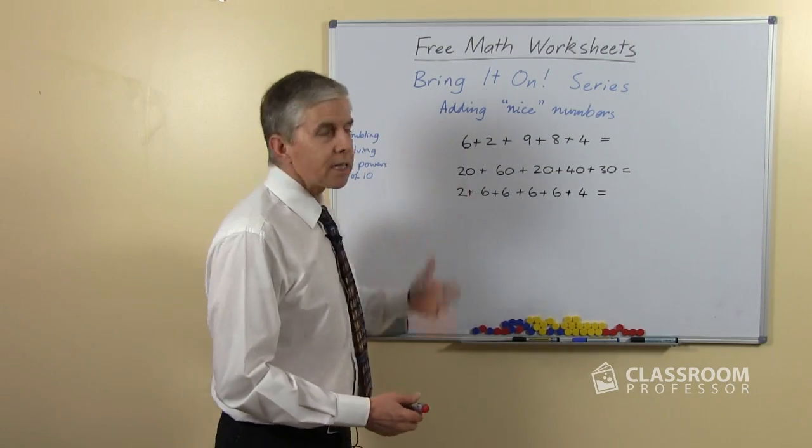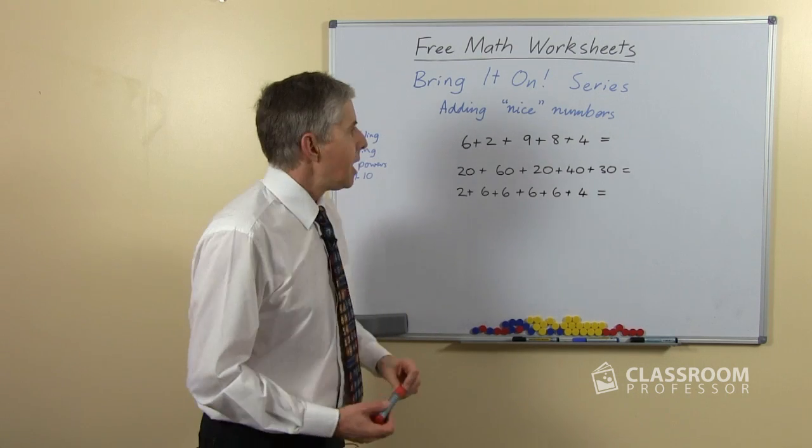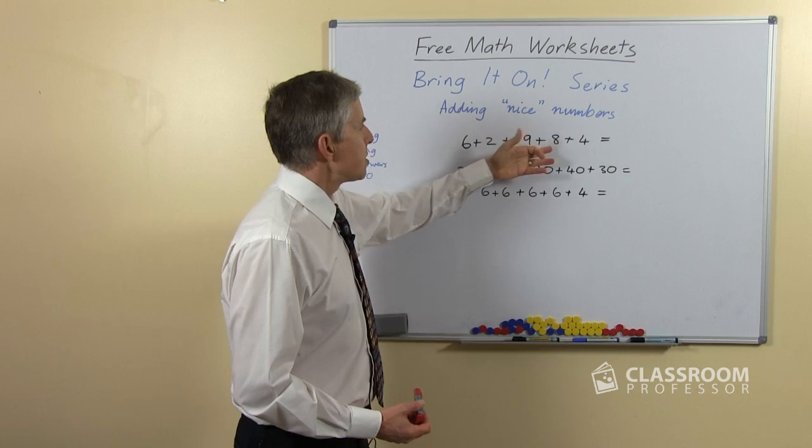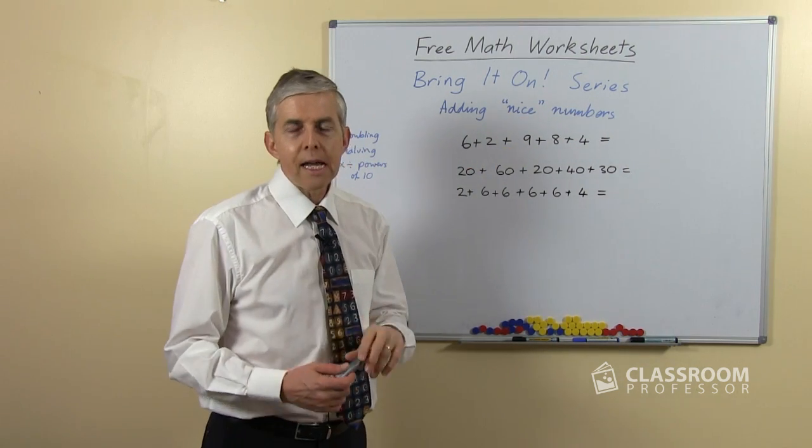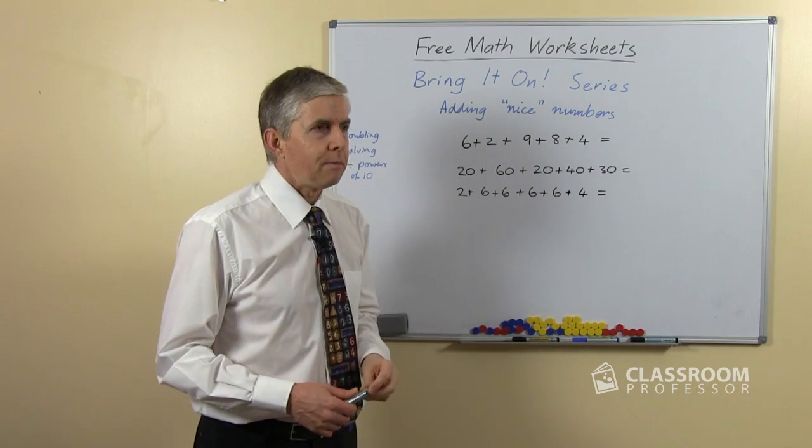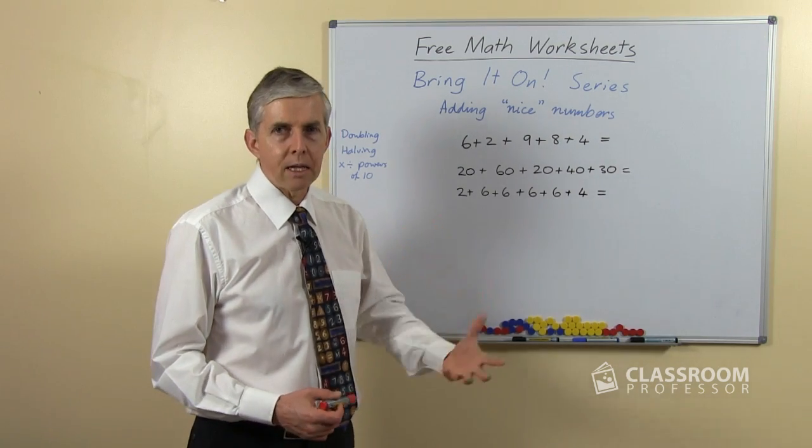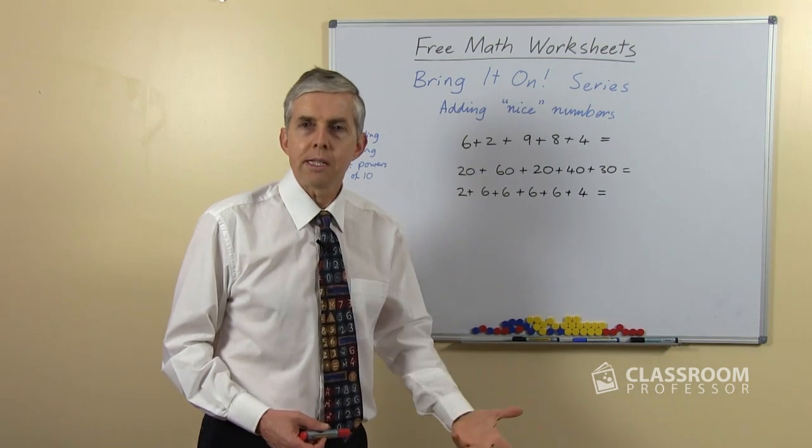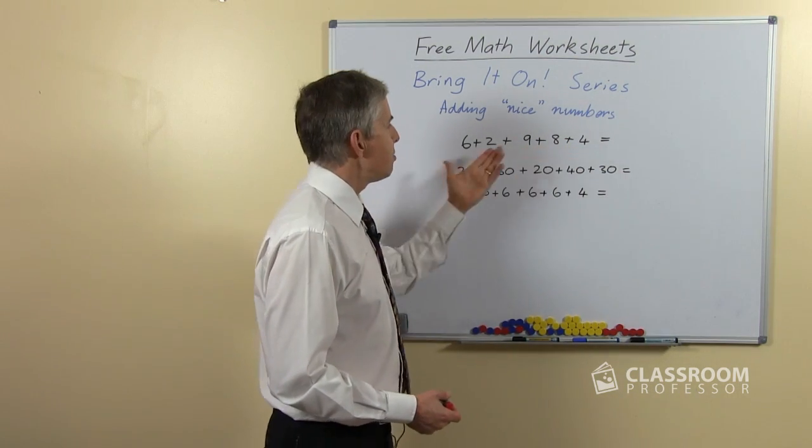So here are some examples from the worksheets. Looking at the first one, 6 plus 2 plus 9 plus 8 plus 4, in a sort of standard way of computing a list of numbers and adding them together, we would normally start from the left and work forwards making sure we didn't miss any out and get to the end.